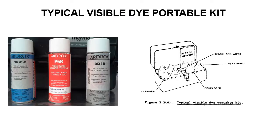This is a typical visible dye portable kit. You've got the cleaners, developers, and penetrants all in a kit. You've got your instructions, some brushes and wipes, and you're ready to go. It's in a little suitcase carry case. You clean it, put the penetrant on, wipe the penetrant off, then spray the developer on, and wait the specified amount of time. Then your penetrant is going to bleed out of the cracks, subsurface cracks, or vacancies in the material, and it's going to show up in contrast on the developer.